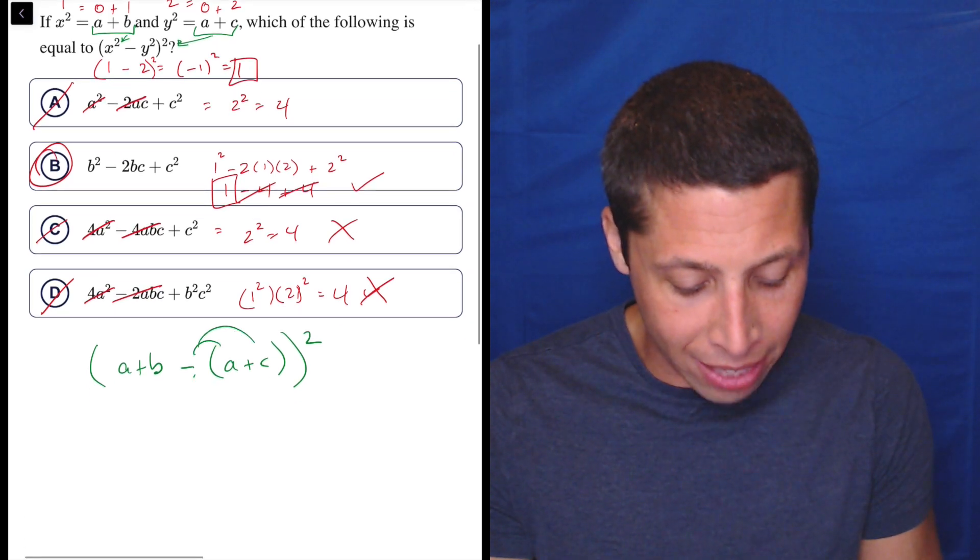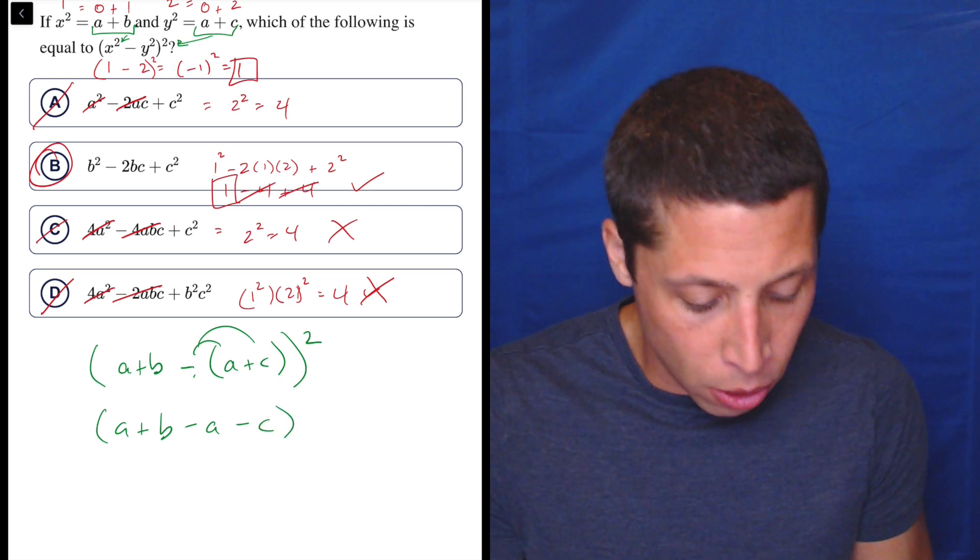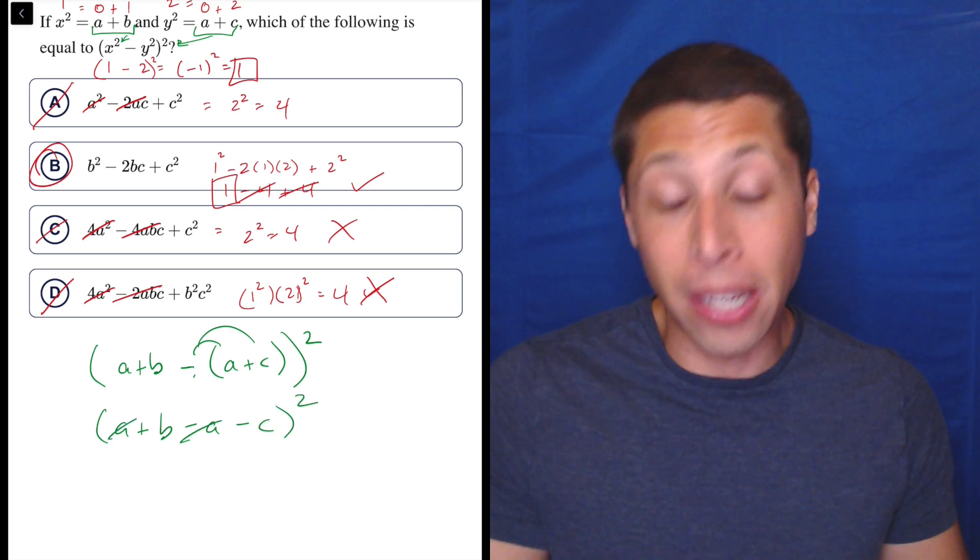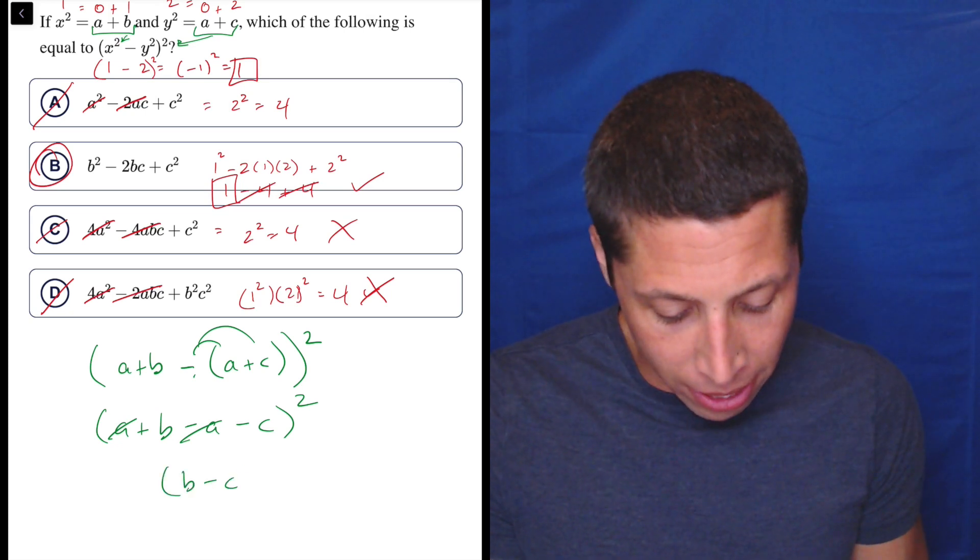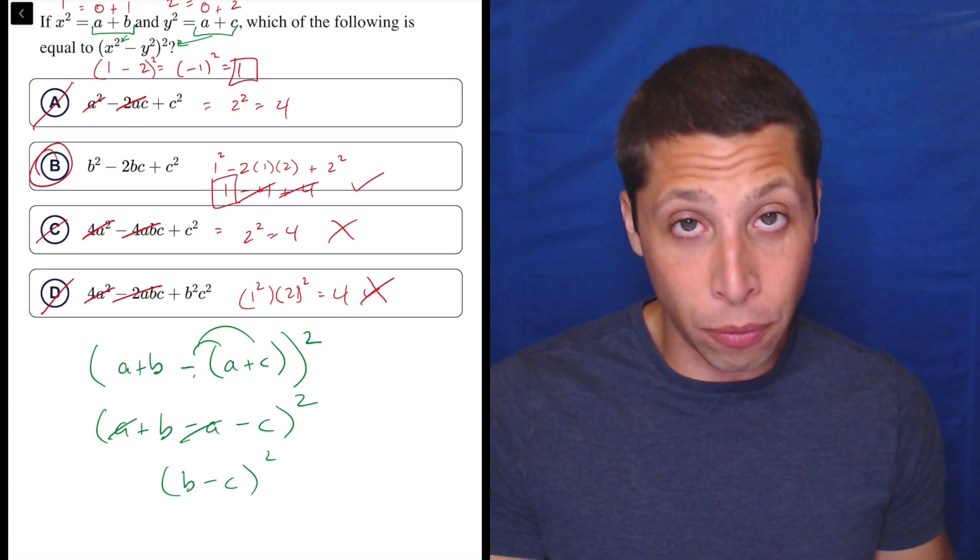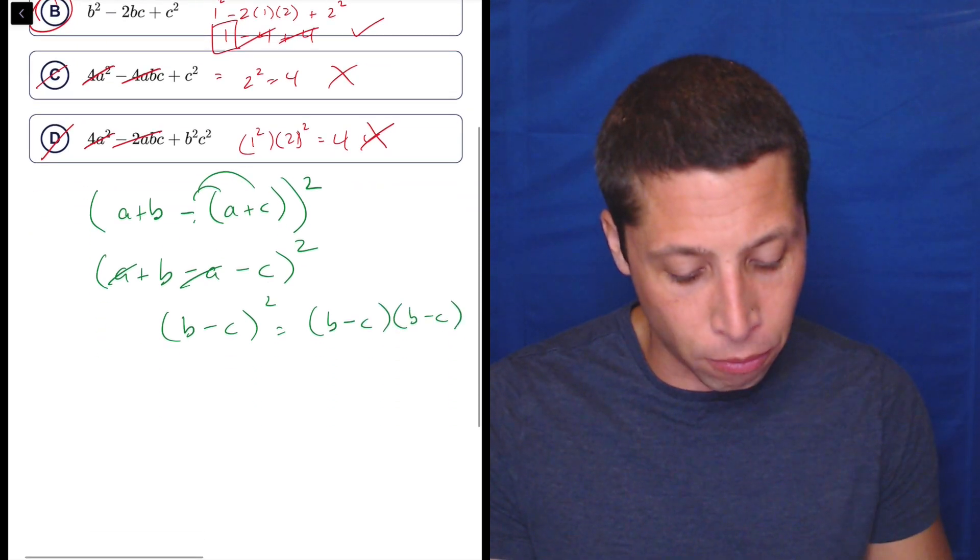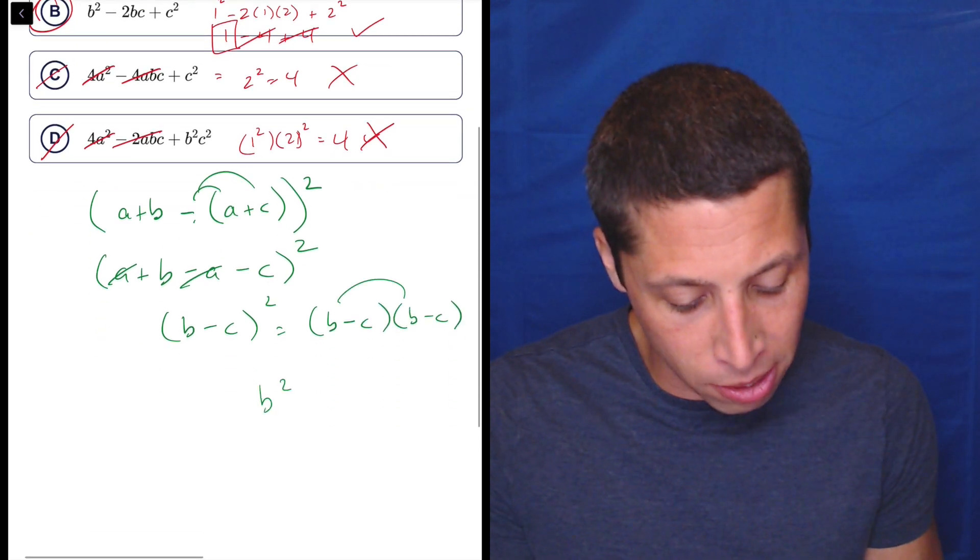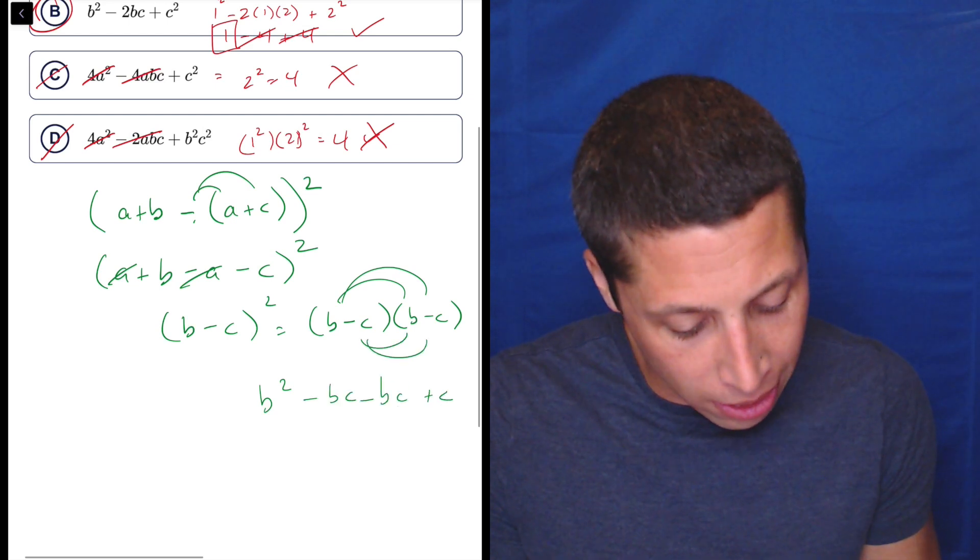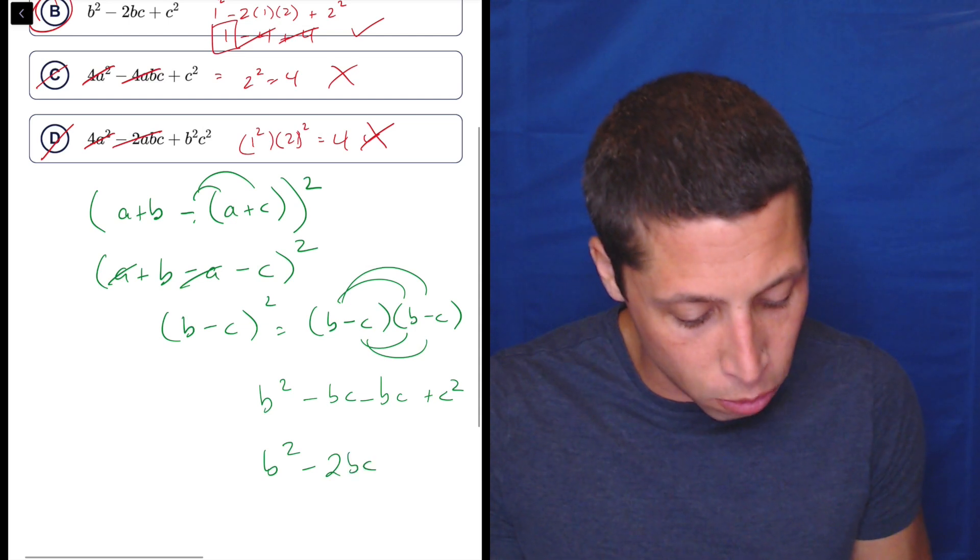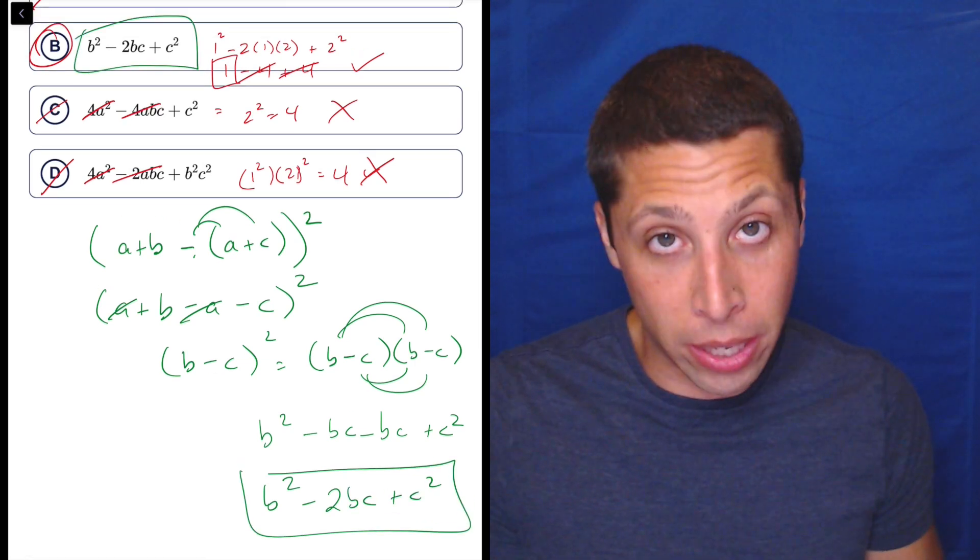Now when we distribute this negative, which is what a lot of people are going to forget, a lot of good things are going to happen. We're going to end up with a dead A, which is why picking zero for it worked out so nicely, it ends up not mattering. So now we have B minus C squared, and we just got to be careful. Remember that that is actually B minus C times B minus C, so we have to FOIL that. So that's going to be B squared minus BC minus BC plus C squared. B squared minus 2BC plus C squared. Is that our answer? Yeah, same thing we got here.